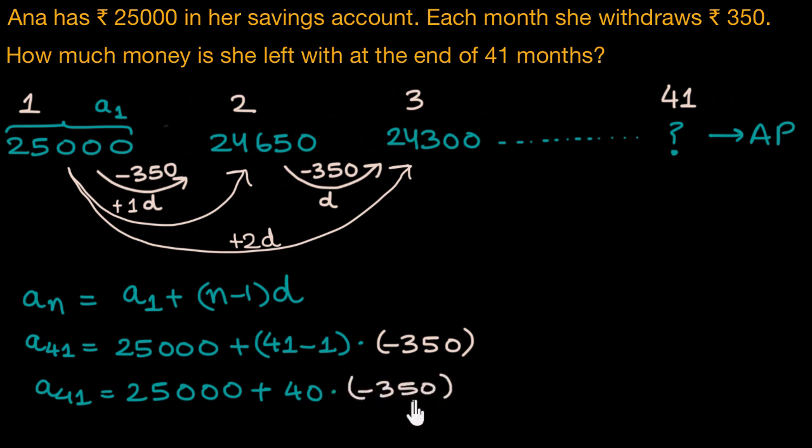So, 40 times 300 is 12,000. And 40 times 50 is 2,000. So, 12,000 and 2,000 is 14,000. So, this simplifies to 25,000 minus 14,000.